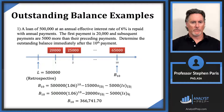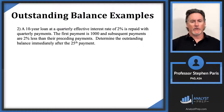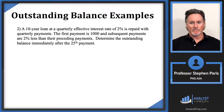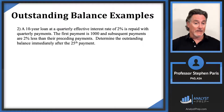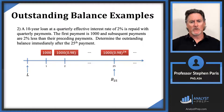Now let's look at a second example. A 10-year loan at a quarterly effective interest rate of 2% is repaid with quarterly payments. The first payment is $1,000 and subsequent payments are 2% less than their preceding payments. We need to determine the outstanding balance immediately after the 25th payment. Doing this step by step would require 25 steps, so we want a more efficient approach.